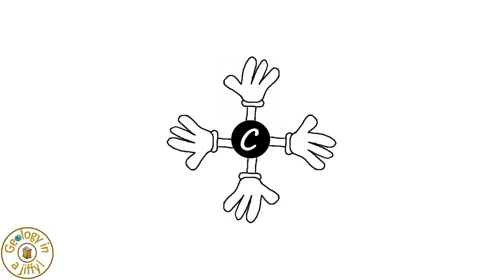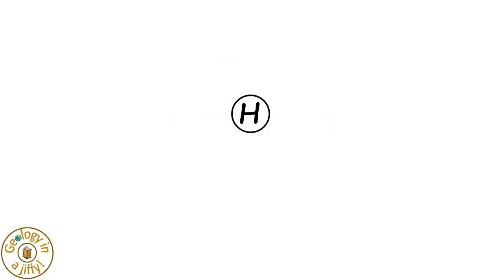We can also model this with carbon being a black ball. We know that carbon needs four friends, so let's pretend that carbon has one, two, three, four hands that it can use to hold on to other atoms with. We can also model hydrogen as being a white ball, and we know that hydrogen needs just one friend, so let's give the hydrogen one hand to join to other atoms with.